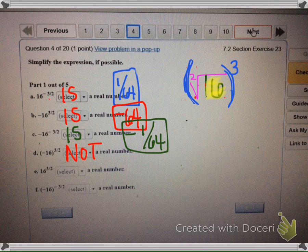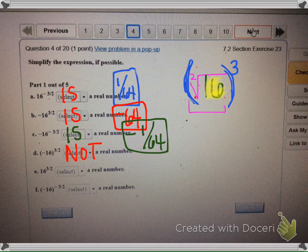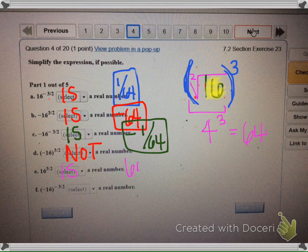The next one is just 16 to the three-halves. There's no negatives here, so the square root of 16 is 4, and 4 cubed is 64. So this is a real number, we get 64.